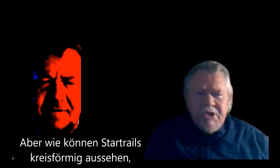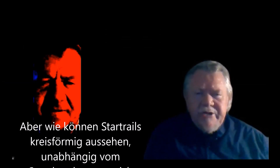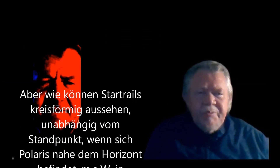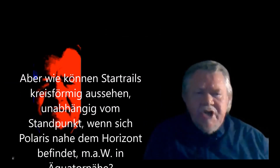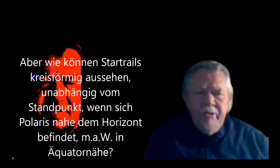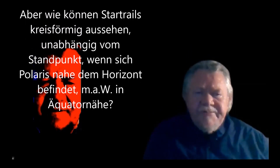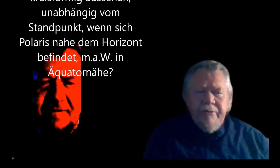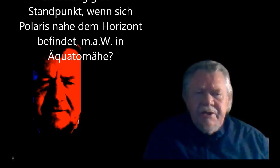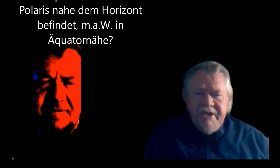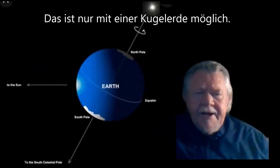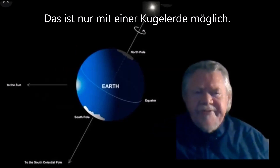How is it possible for star trails around Polaris to be circular no matter where you are standing, particularly if you are observing Polaris close to the horizon, which also means close to the equator? Clearly, that can only happen on a sphere model.